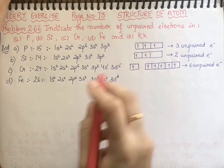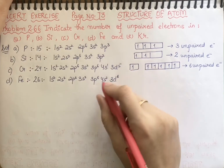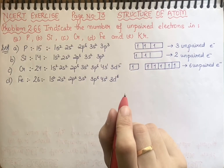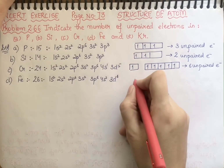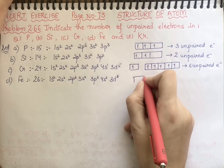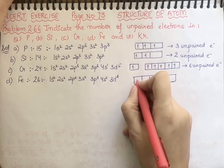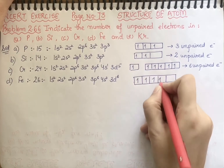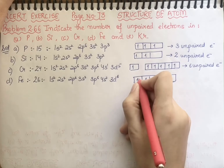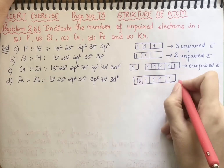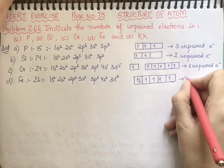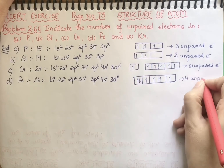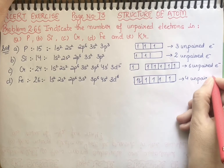Now for chromium, 4s1 has one electron — not fully paired. In the case of 3d, if we look at the distribution: 1, 2, 3, 4, 5, and 6 electrons total in 3d6. We identify the unpaired electrons by applying Hund's rule across the five d orbitals.